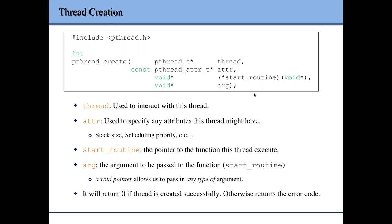The third argument is the function pointer. After you start a new thread, you want it to execute some function, so this pointer points to the function you want the new thread to execute. This function takes a void pointer as an argument, so you can pass any type of argument by casting a pointer to void pointer. It also returns a void pointer as the return value.